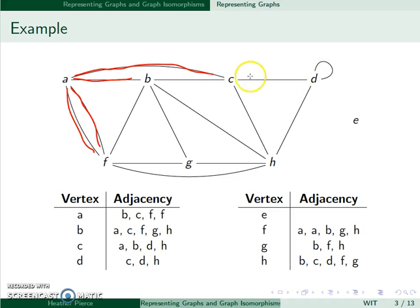You'll notice D is adjacent to C, H, and itself since it has a loop. We also have that E is an isolated vertex, so we see its adjacency list is empty.